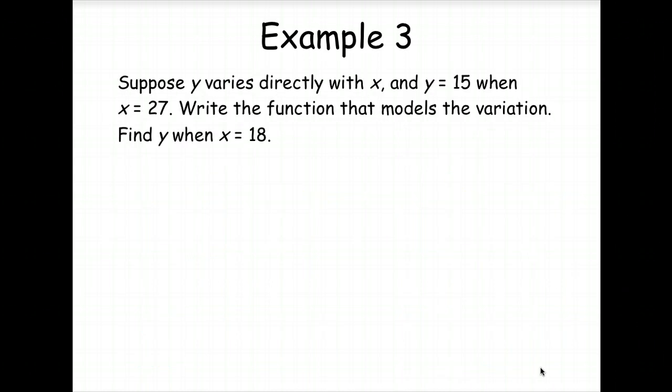Example 3. Suppose that Y does vary directly with X, and Y is equal to 15 when X is equal to 27. We're to write the function that models the variation, and we're to find Y when X is equal to 18. Okay, first of all, we know we've got to find K.